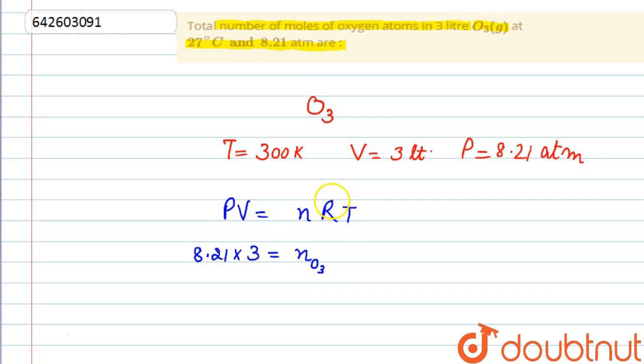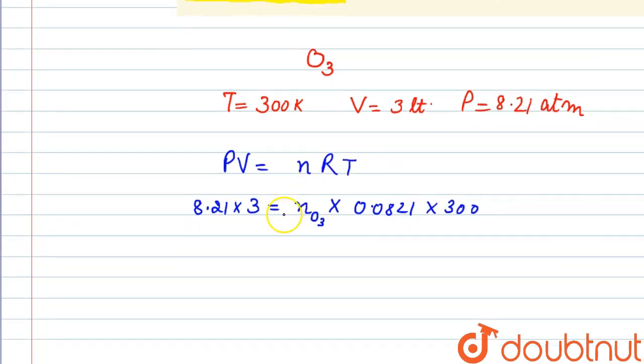So R is the gas constant. Because pressure is in atmosphere, we will take the value of R as 0.0821. Temperature equals 300 Kelvin. Now this will be 8.21 into 3 divided by 300 into 0.0821 equals n, the number of moles of O3.